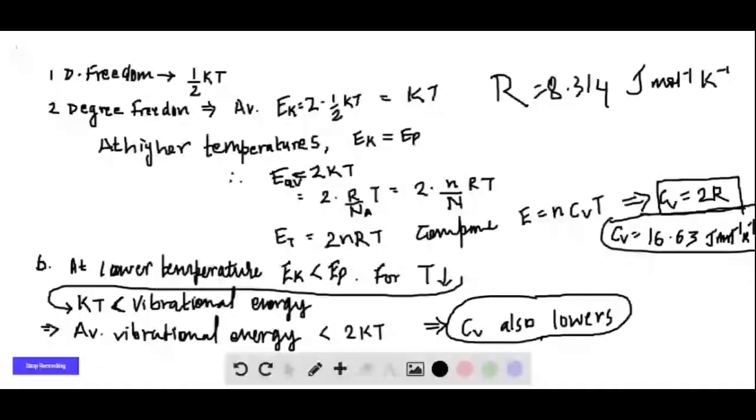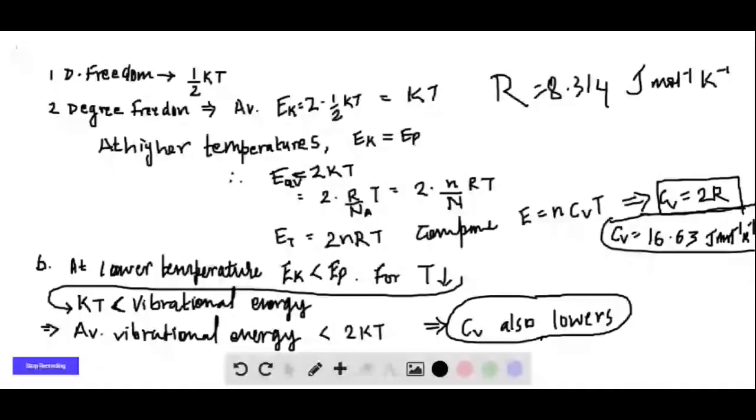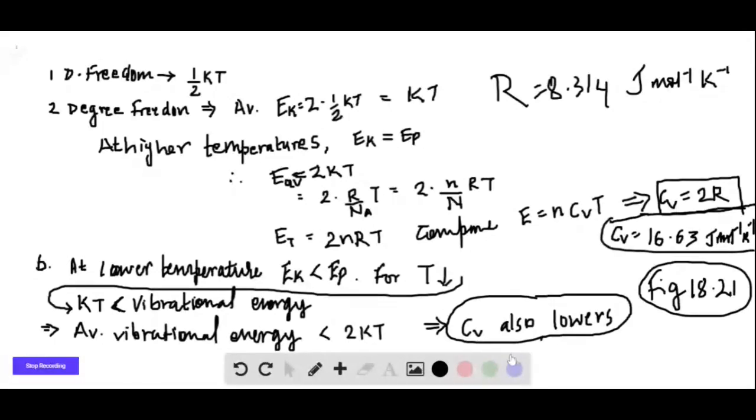If you see in the graph, you can find it in figure 18.21. From figure 18.21, it also shows that at lower temperatures the CV of a three-dimensional crystal goes on decreasing. The same is the case for this two-dimensional crystal. This ends the solution for our question. Thank you for watching.